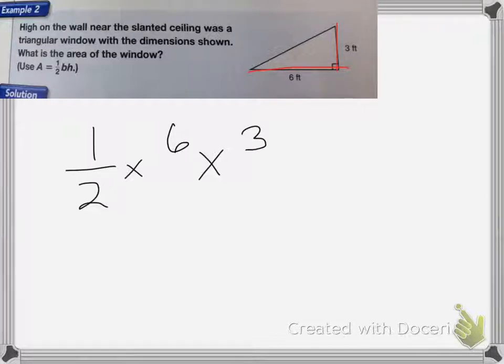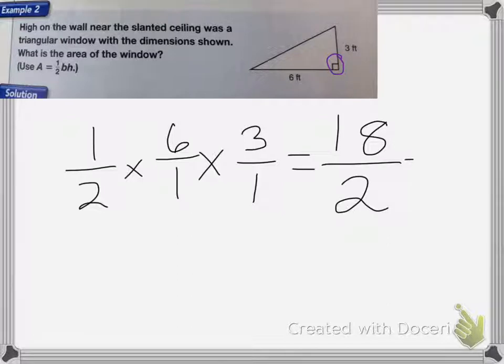You know the 3 is perpendicular because it forms a right angle. So I'm going to be multiplying these fractions together. So 1 times 6 times 3 is 18, and then 2 times 1 times 1 is 2. 18 divided by 2 is 9, and my label is going to be feet squared.